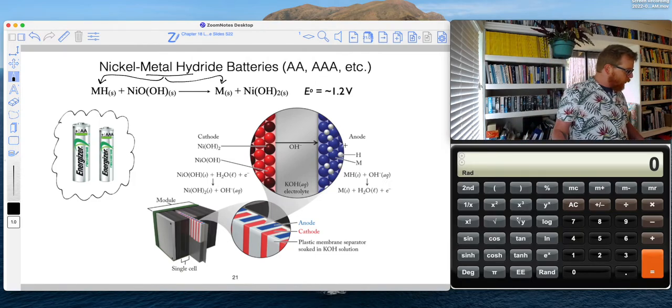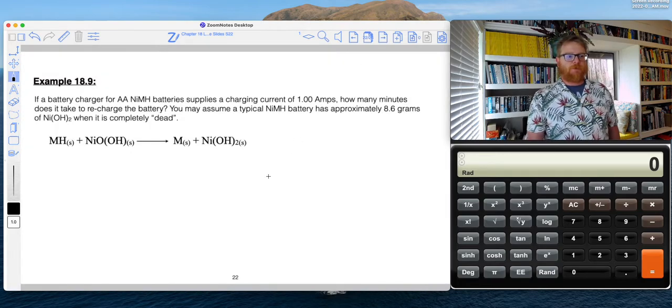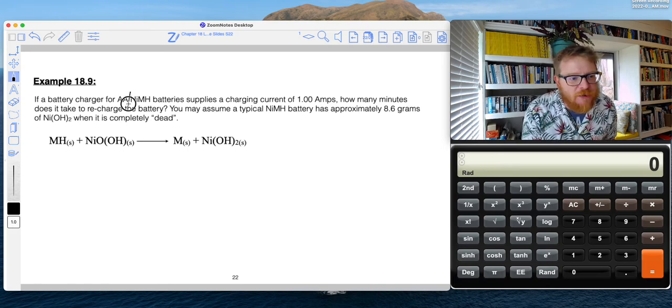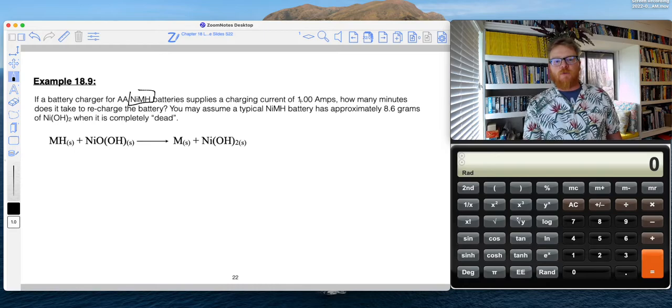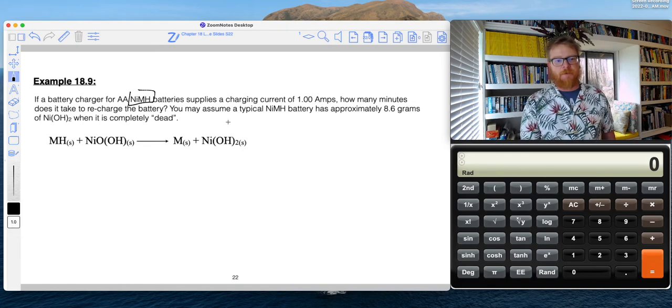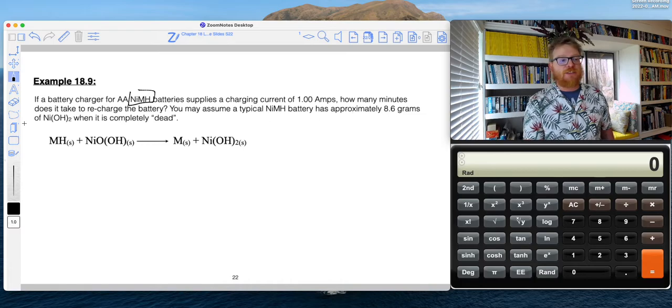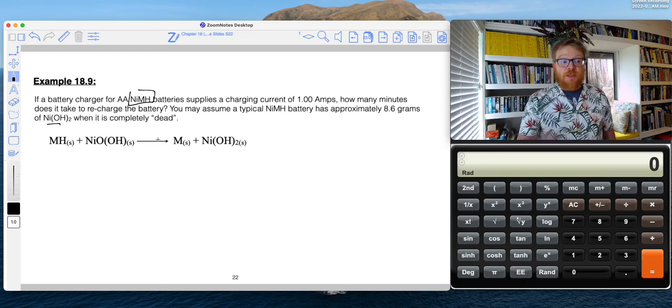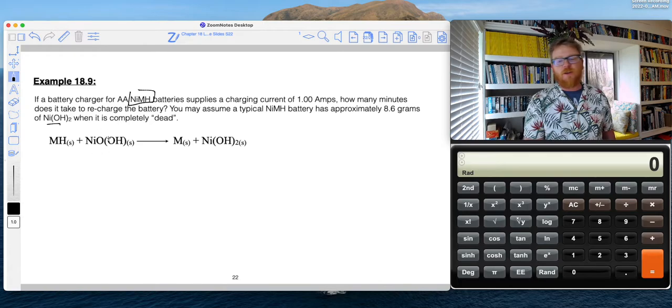So let's do a sample calculation. So if a battery charger for a AA nickel metal hydride battery supplies a charging current of 1.00 amps, how many minutes does it take to recharge the battery? You may assume a typical metal hydride battery has approximately 8.6 grams of nickel hydroxide when it's completely dead. So in other words, the reaction starts like this with the metal hydride and this rather weird nickel oxide complex.